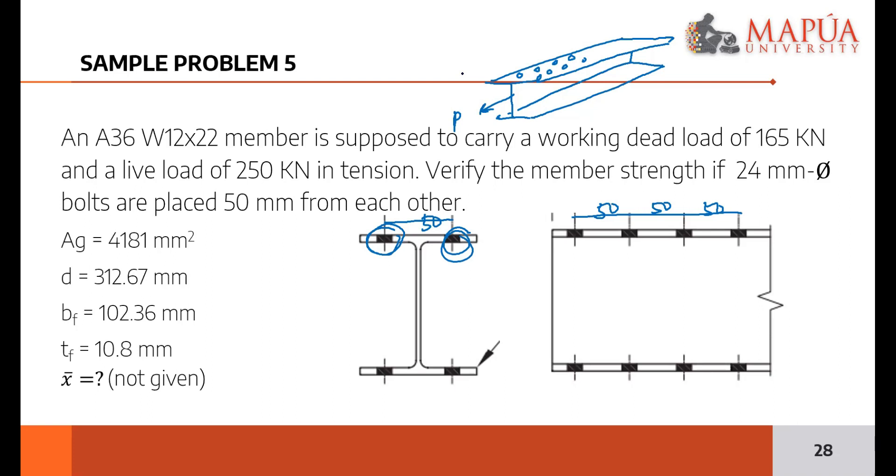So we have four lines of connection. When I say lines of connection, this is the line of connectors which is parallel to the direction of the load P. We have two lines of connection in the upper flange and two in the lower flange. So we have four lines of connection total. For each line of connection, we have four pieces of bolts.